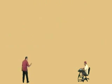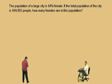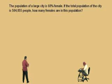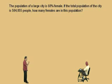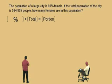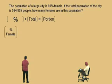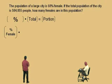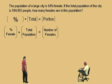Let's do another one. The population of a large city is 60% female. If the total population of the city is 584,855 people, how many females are in this population? Here's our format: a percent of a total is a portion. Our percent is the percent female. Our total is the total population. And our portion is the number of females.